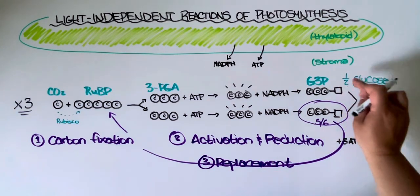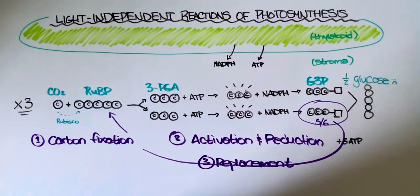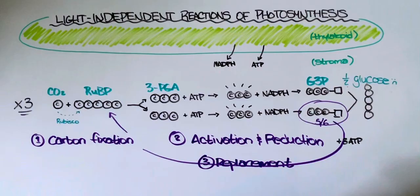Which means to get one glucose molecule we multiply all of this by two. So that means there are 18 ATPs that go into making just one single glucose.